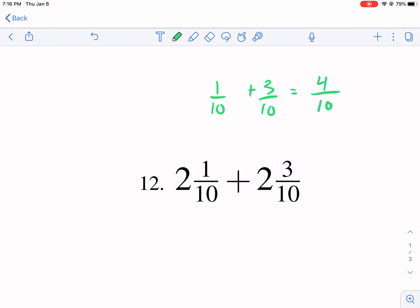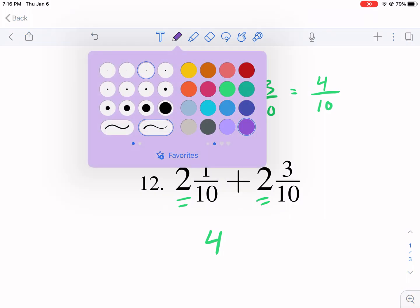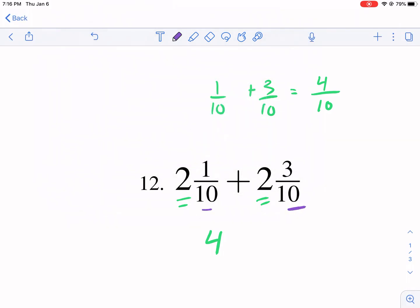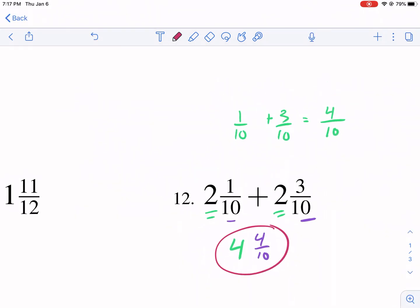What you can do first is you add these whole numbers together. So two plus two would give us four. And we change color here just so you can see it differentiate a little bit more. And then we have one tenth plus three tenths, and that's equal to four tenths. So our complete final answer would be four and four tenths. That would be our answer.